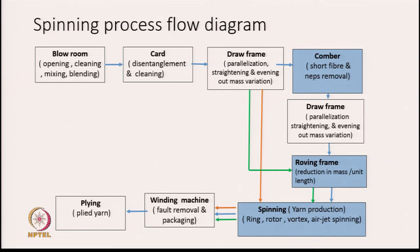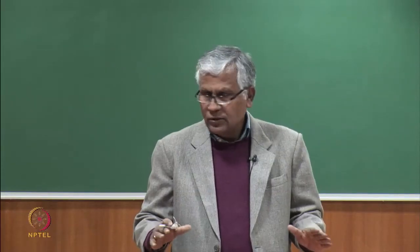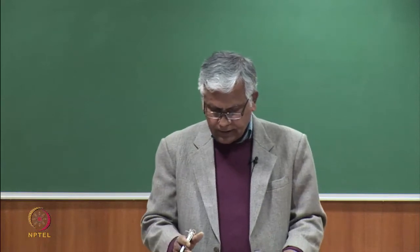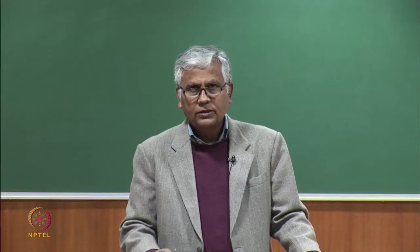If we want to bypass the comber and produce a carded yarn — that is, we do not want to remove short fibers — then from the draw frame we directly go to the roving frame. The green line indicates going from draw frame to roving frame, and then from roving to the spinning machine. This is called carded yarn. So in a spinning line there could be a comber or there may not be one. A comber is required when we want to produce better quality yarn and get rid of short fibers.